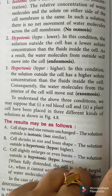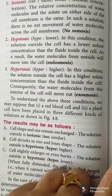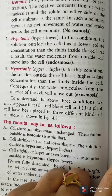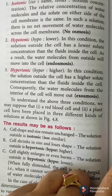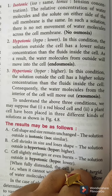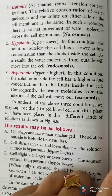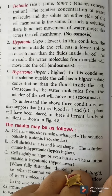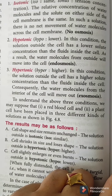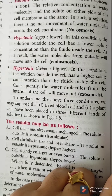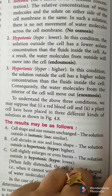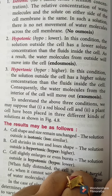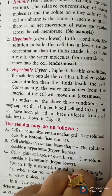Second, hypotonic solution. This solution is less concentrated — less dense — than the cell sap, meaning it contains more water molecules. When a plant cell is kept in a hypotonic solution, due to its lower concentration, water molecules move from the solution into the cell. This is called endosmosis.